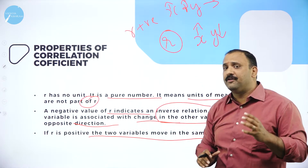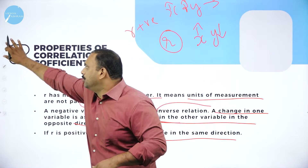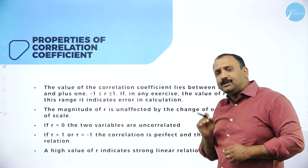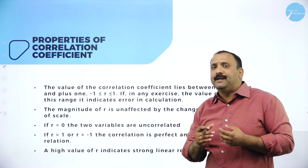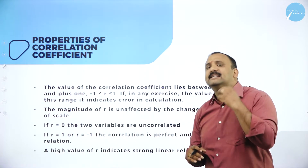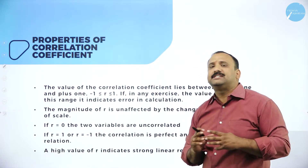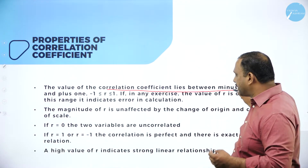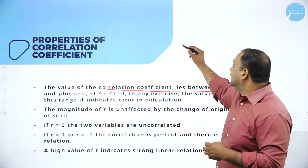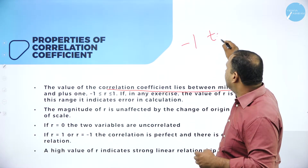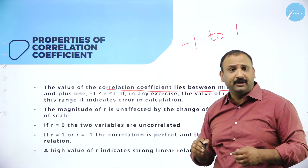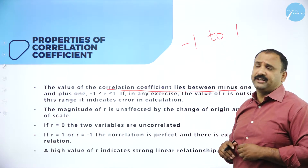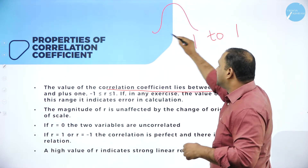Moving forward on the properties of the correlation coefficient: the value of the correlation coefficient lies between minus one and plus one. The moment I use the word coefficient, it means there is some factor and analysis we need to understand deeply. The range of r is from minus one to plus one.